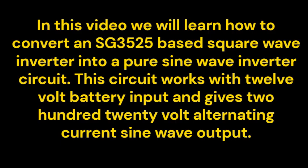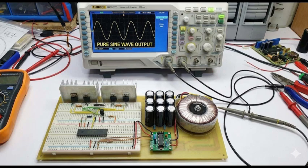In this video we will learn how to convert an SG3525 based square wave inverter into a pure sine wave inverter circuit. This circuit works with 12V battery input and gives 220V alternating current sine wave output.